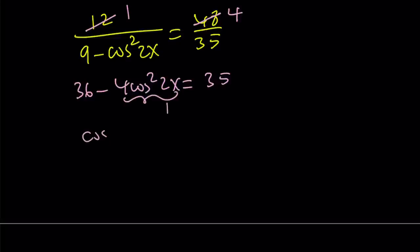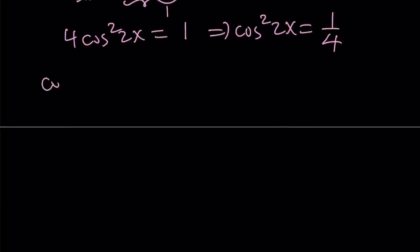So this gives us 4 cosine squared 2x equals 1, which means cosine squared 2x equals 1 fourth. And obviously this has two results. One of them is going to be positive. So we can say that cosine 2x equals 1 half or cosine 2x equals negative 1 half.